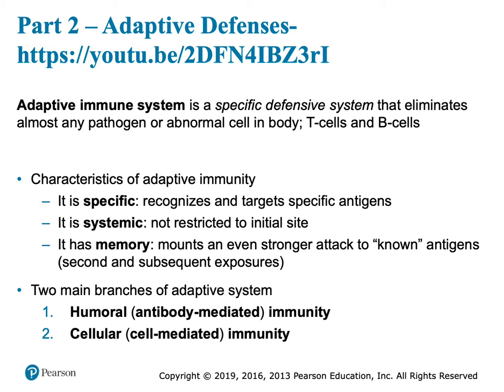Another innate response is inflammation. You get a boo-boo, you're going to have an inflammatory response. The cardinal signs of inflammation are swelling, redness, heat, and pain — a perfect lecture question. When you get a boo-boo, your body releases inflammatory chemicals, causing vessels to dilate. That makes those capillaries more permeable, so phagocytes can leave. The mast cells release histamine, causing vasodilation.